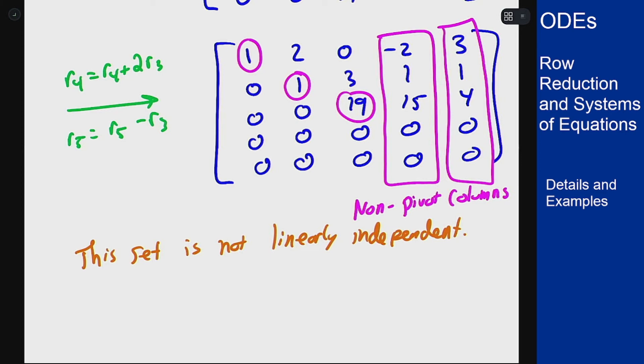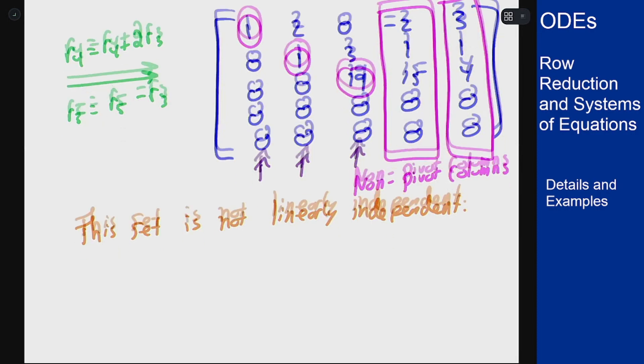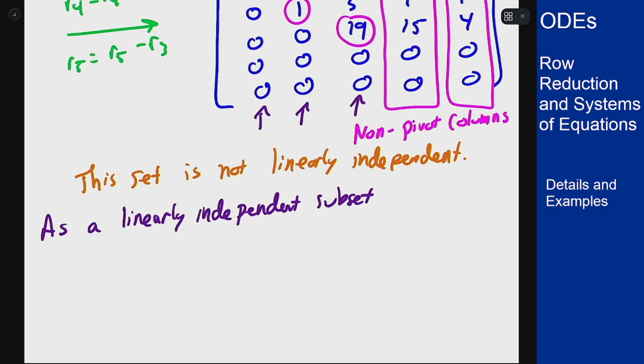Furthermore, because I took the vectors as columns, I know that I can take the vectors that were in column one, column two, column three, and those will be linearly independent. Because if they weren't, they would have been the non-pivot column. So as a linearly independent subset, I can take the first three vectors.